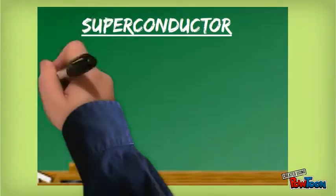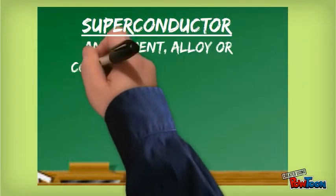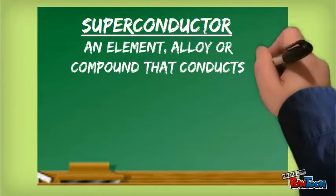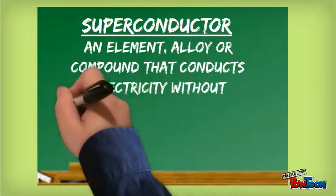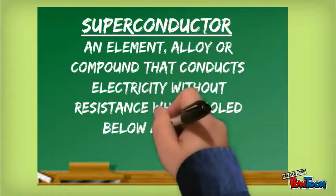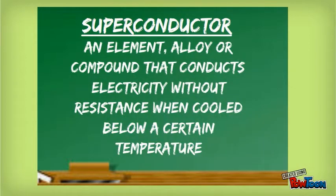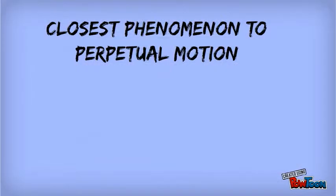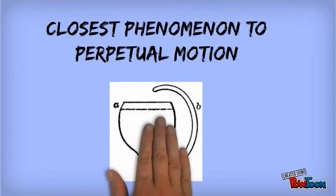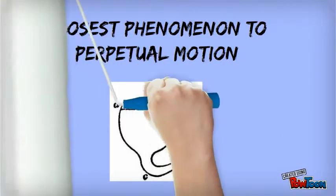Before we go on, let's define a superconductor. A superconductor is an element, alloy, or compound that conducts electricity without resistance when cooled below a certain temperature. Superconductivity is the closest phenomenon to perpetual motion that we have achieved.